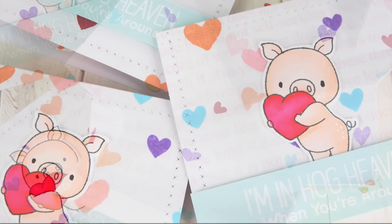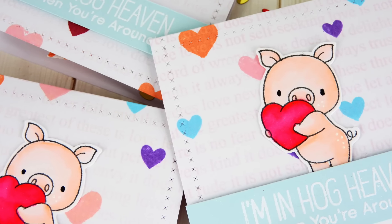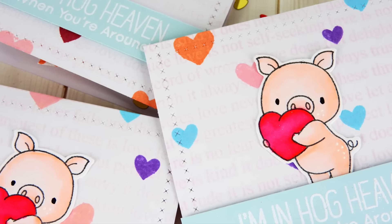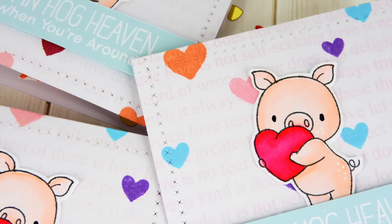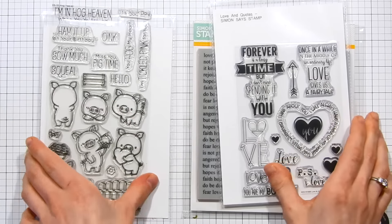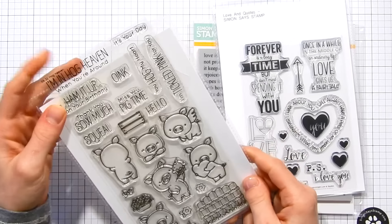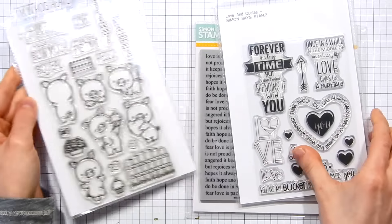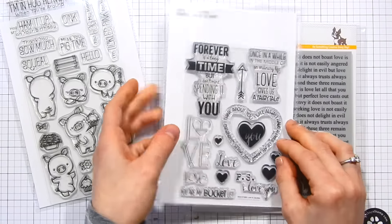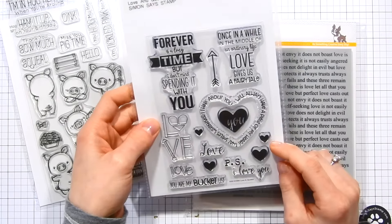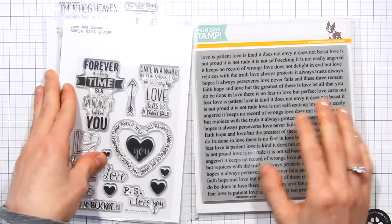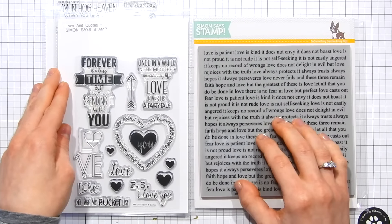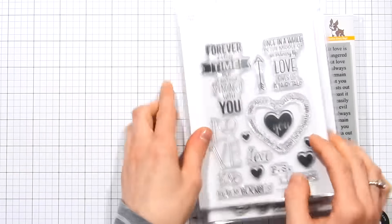I'm going to be using products from My Favorite Things today to create these cards, as well as some new stamps from Simon Says Stamp. We've got the Hog Heaven stamp set from My Favorite Things—these pigs are so adorable, we're going to be using the one with the heart. I've also got the Love and Quote stamp set and also this Love Is background stamp, both from Simon Says Stamp's newest release, Hey Love.